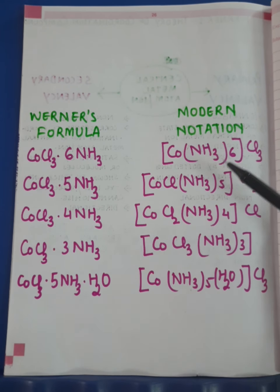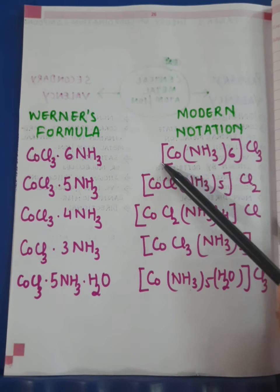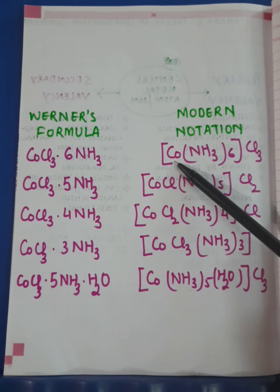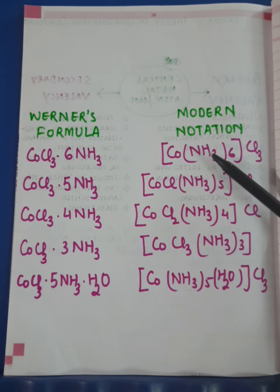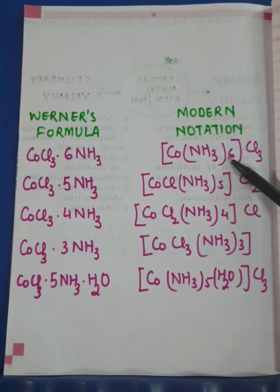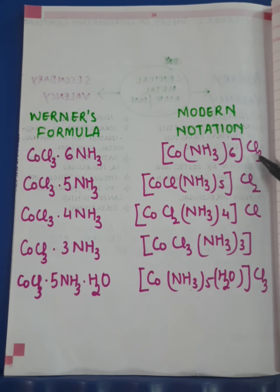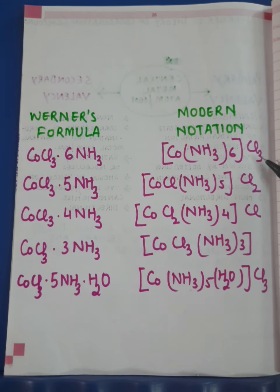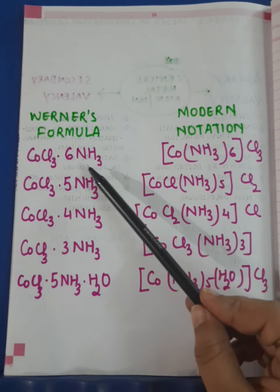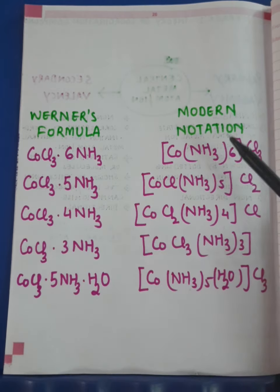For a coordination compound in modern notation there are two spheres. The first is the coordination sphere, where we represent the central metal atom or ion along with the ligands — groups, molecules, atoms, or ions bonded via secondary valency. The second is the ionization sphere, which comprises negative ions bonded via primary, ionizable valency. This is the difference for the first compound between Werner's formula and modern notation.